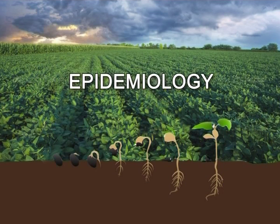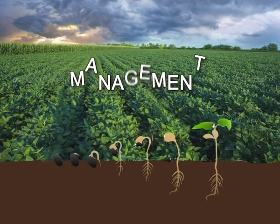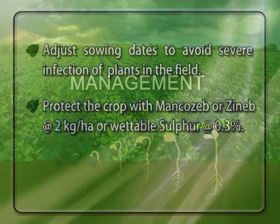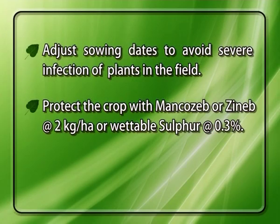The primary source of inoculum is teliospores in cooler regions and on collateral hosts. Secondary spread is by wind-borne uredospores. It attacks French beans, green gram, black gram and cowpea. For management, adjust sowing dates to avoid severe infection. Protect the crop with Mancozeb or Zineb at the rate of 2 kg per hectare, or wettable sulphur at the rate of 0.3%.